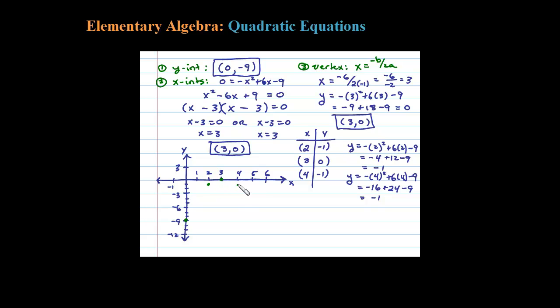And 4 comma negative 1. So here's a few points. We know the parabola opens down because the leading coefficient is negative, so the basic picture, the rough sketch is going to look like that. Let me connect the dots. Here's a rough sketch connecting the dots. Notice here if I draw a vertical line through the vertex, that's my line of symmetry at x equals 3. So we can get a point of symmetry that corresponds to this 0 comma negative 9.